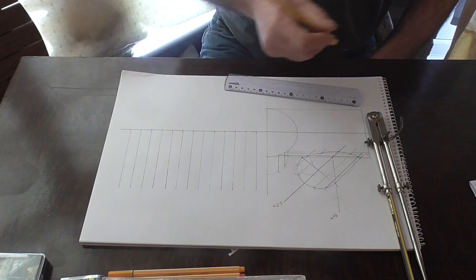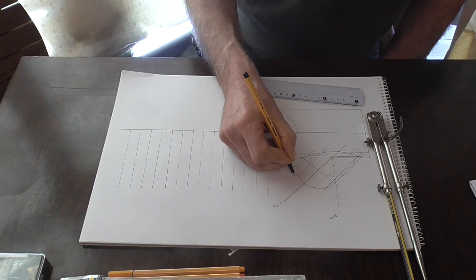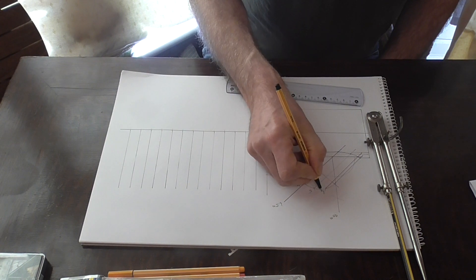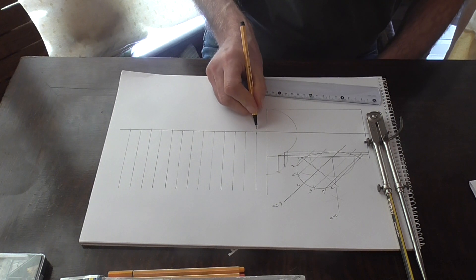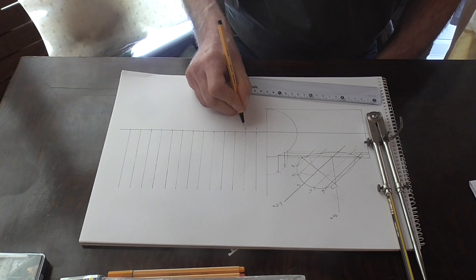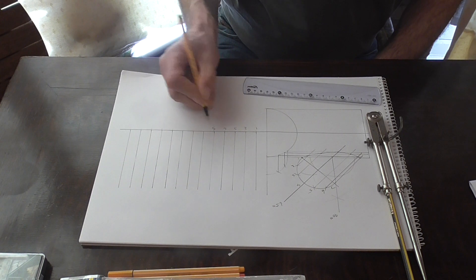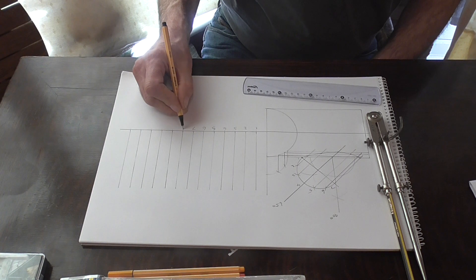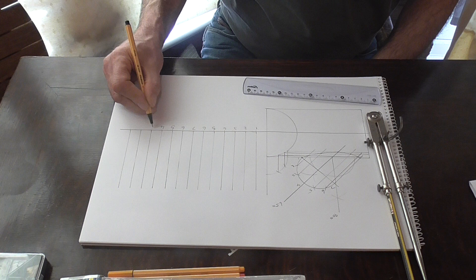All that's left to do is number them so we go 1, 2, 3, 4, 5, 6 and 7 and here we've got 1, 2, 3, 4, 5, 6, 7, 6, 5, 4, 3, 2 and 1.